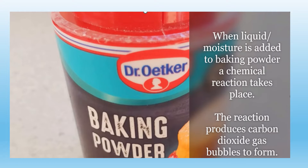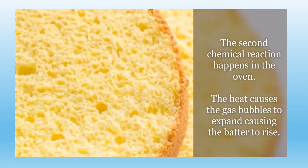When water is added to baking powder, a chemical reaction takes place, producing carbon dioxide gas in the form of bubbles. A second chemical reaction happens in the oven, where heat causes the gas bubbles to expand, causing the cake to rise further.